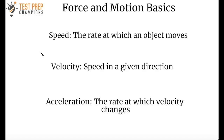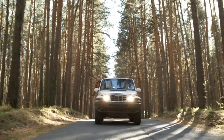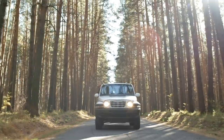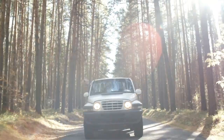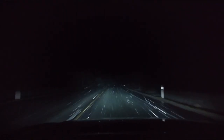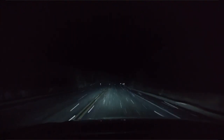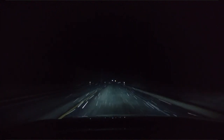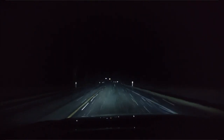So let's start off with some force and motion basics with some important terms. The first term is speed, and speed is the rate at which an object moves. So let's say you're driving or riding in a car and you're going 45 miles per hour — that's an example of speed. Now, velocity is defined as speed in a given direction. So if we say 45 miles per hour going west or north or south, that's an example of velocity.